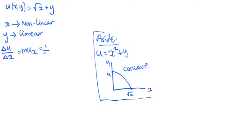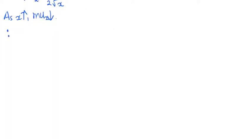The marginal utility of x is the derivative of U with respect to x. We can see that as x increases, the marginal utility decreases. In other words, x exhibits diminishing marginal utility.